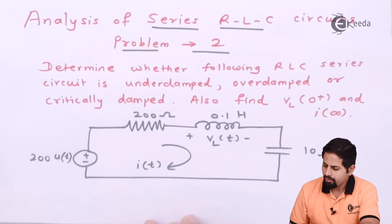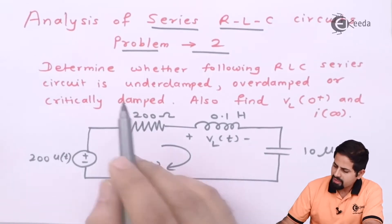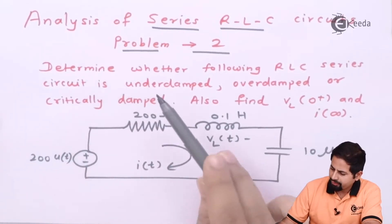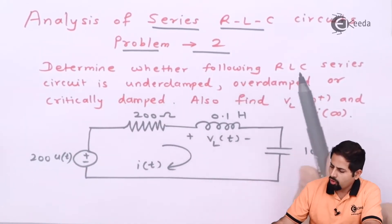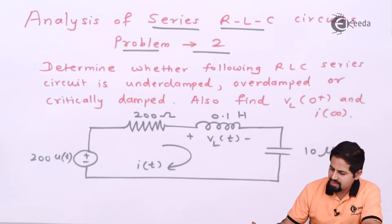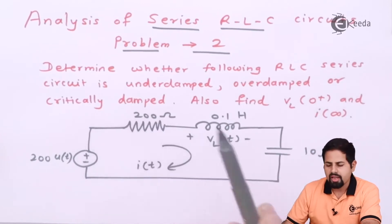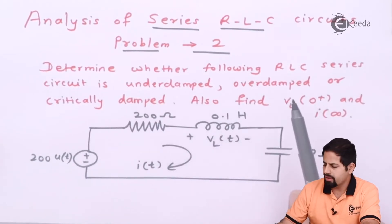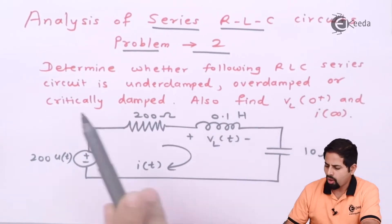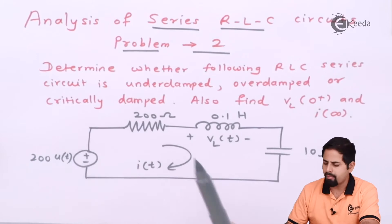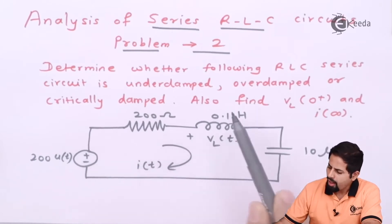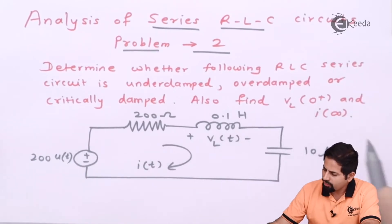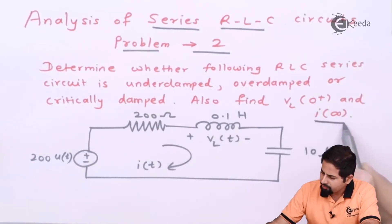Here you can see that they are saying: determine whether the following RLC series circuit is under-damped, over-damped, or critically damped, and also find VL of 0-plus and I of infinity.